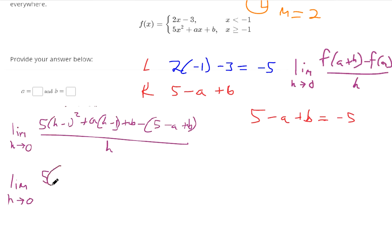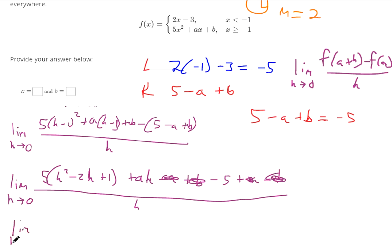So h minus 1 squared, that's h squared minus 2h plus 1. Then we distribute that a, add b, subtract 5, plus a, minus b. It's all divided by h. This a and this a can cancel. This b and this b can cancel. If I distribute the 5, that's 5h squared minus 10h plus 5 plus ah. So the plus 5 and the minus 5 are going to cancel.